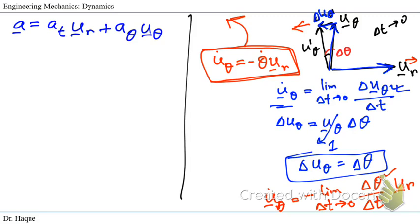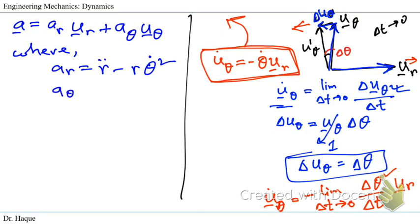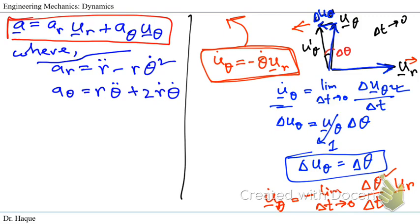This is the radial component — not tangential — so it is a_R, where a_R equals r-double-dot minus r·θ-dot², meaning the double derivative of r minus r times the first derivative of θ squared. And a_θ equals r·θ-double-dot plus 2·r-dot·θ-dot, where r-dot is the first derivative of r and θ-dot is the first derivative of θ. This is our acceleration equation in polar coordinates.